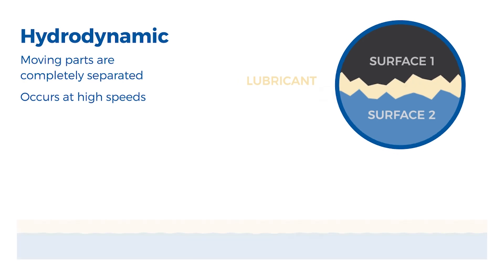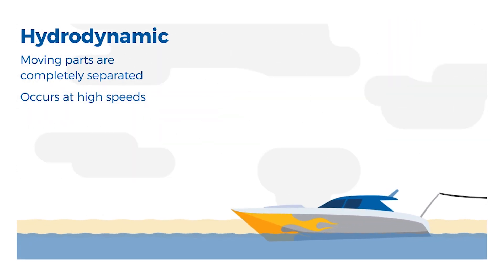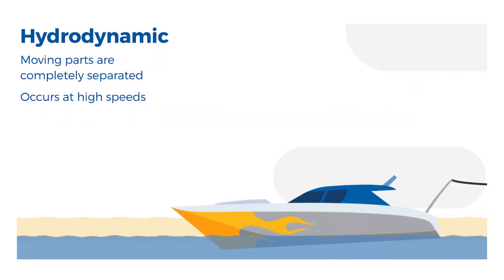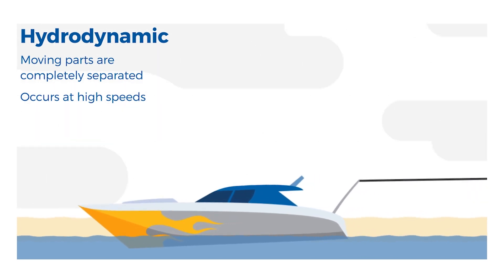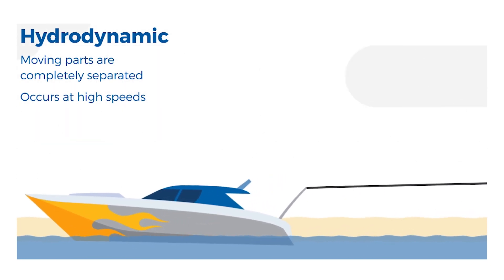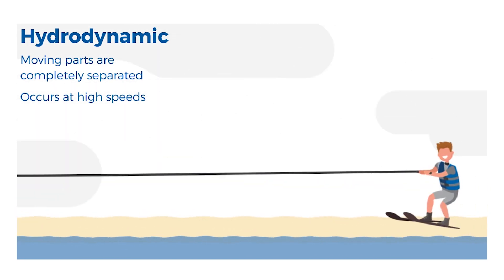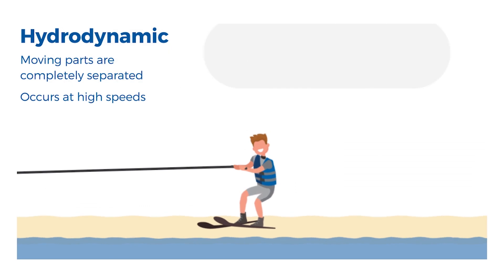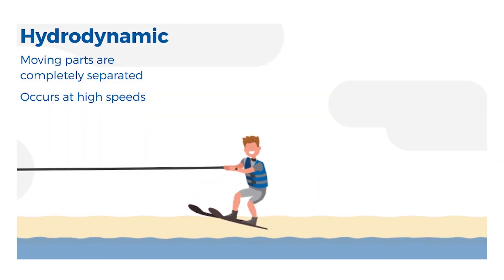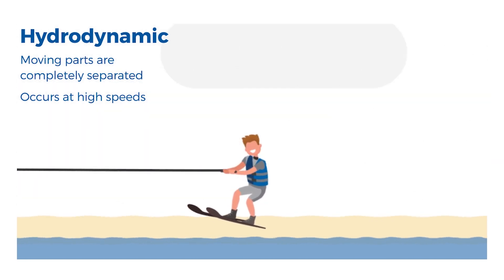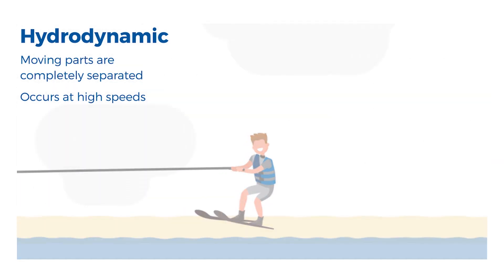Back to our previous example, imagine how the boat has been at maximum throttle for long enough that you reach full speed. At full speed, the nose of the boat comes down and you move so fast that you just skim over the top layer of water. While we definitely do not recommend trying this at home, this example demonstrates hydrodynamic lubrication.